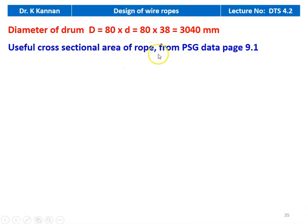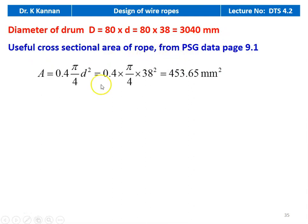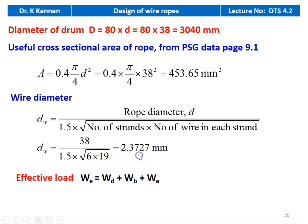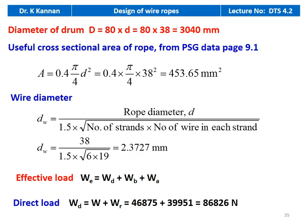Useful cross-section area from PSG design data book page 9.1: A equal to 0.4 into 5/4 into 38 squared equal to 453.65 millimeter squared. Wire diameter D_w equal to 38 divided by 1.5 into square root of 6×19 equal to 2.3727 millimeter. Effective load W_E equal to W_D plus W_B plus W_A. Direct load W_D equal to W plus W_R equal to 46,875 plus 39,951 equal to 86,826 newton.